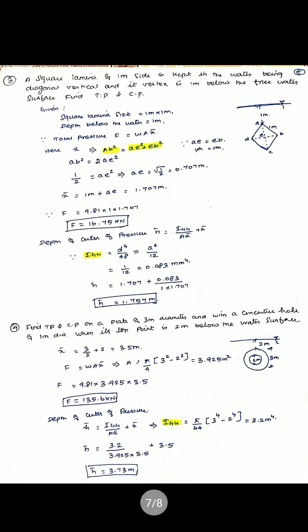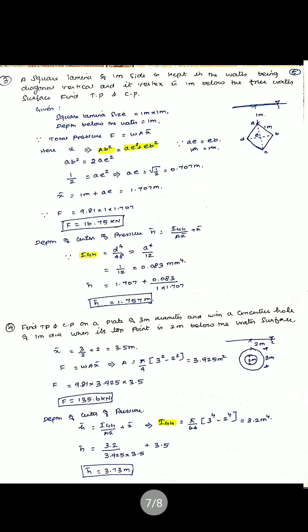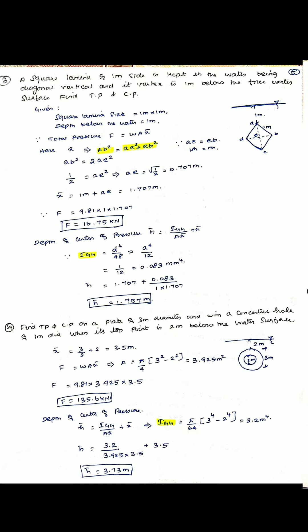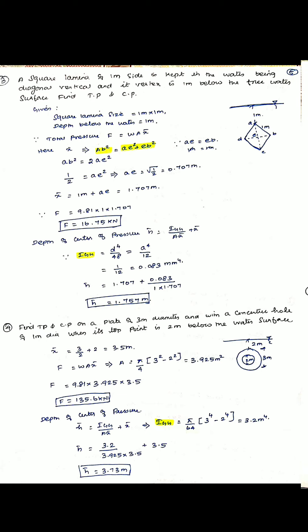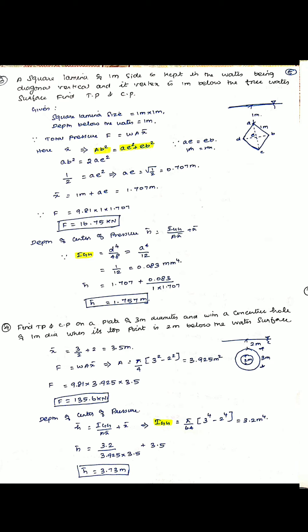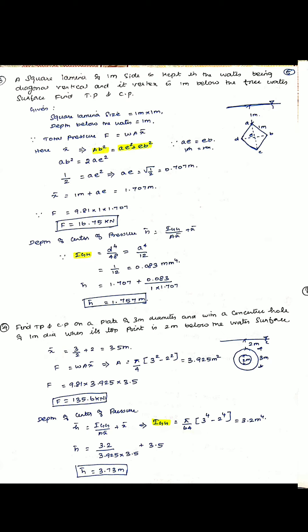Problem 3: a square lamina of 1 meter side is kept in water with its diagonal vertical, and its vertex is 1 meter below the free water surface. Find total pressure and center of pressure. The lamina is labeled ABCD with center point E. We need AE: since AB = 1, AB² = AE² + EB², and AE = EB, so 1² = 2·AE², giving AE = √(1/2) = 0.707 meter.